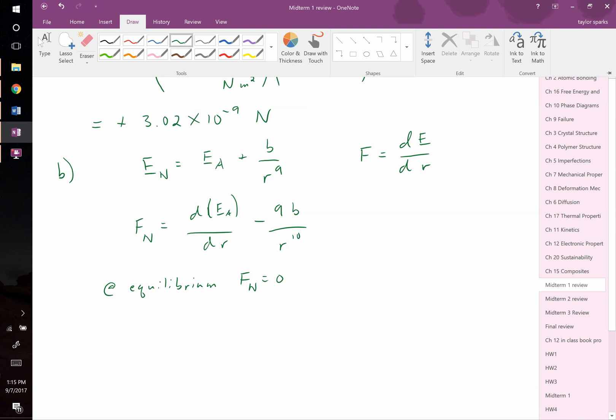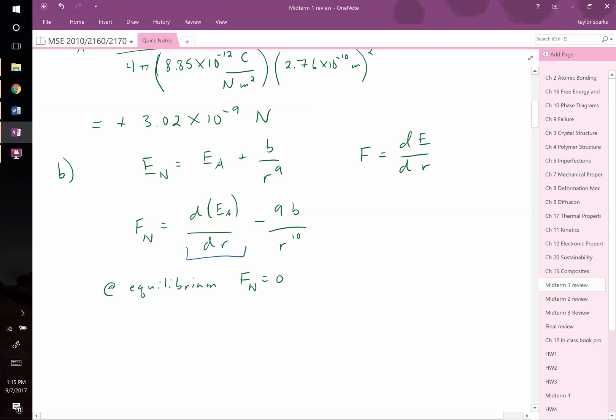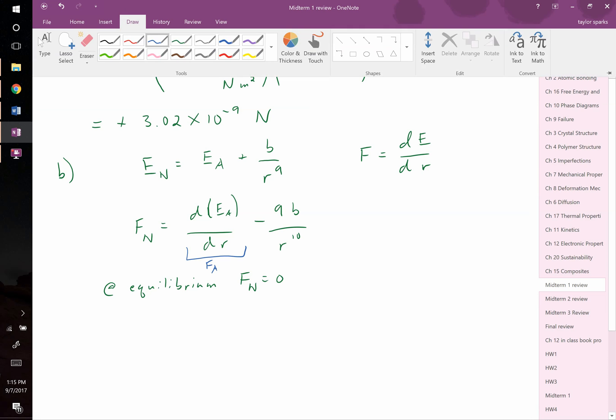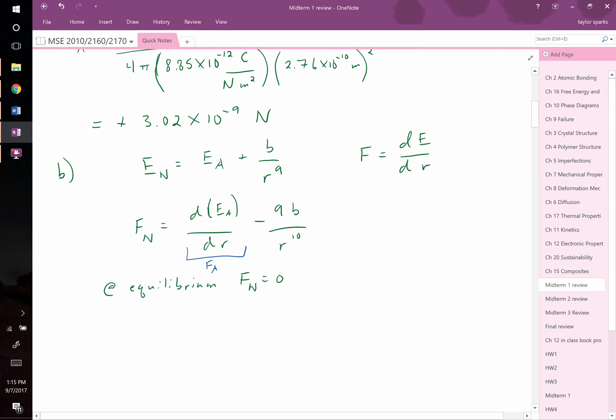Therefore, this whole term here is simply equal to our attractive force, which we solved for in the first part of this problem. That makes our life easier. Therefore, we can write the following. We can write that 0 equals 3.02 times 10 to the negative 9th newtons minus 9 times B over...